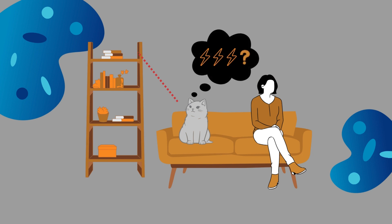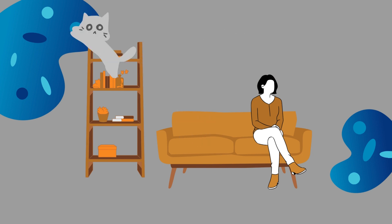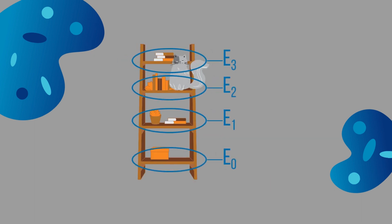In order for the cat to get on the shelf though, it needs to jump with just the correct energy. Too much and it will fly over the shelf. Too little and it won't make the jump. The cat can only jump on the shelf if it meets the correct energy requirement, and you can think of each shelf having its own energy. What we have just described is quantization of energy.